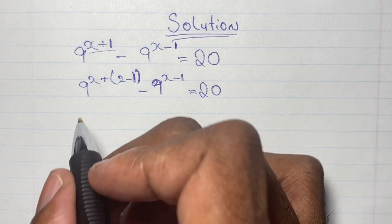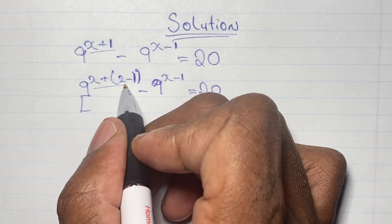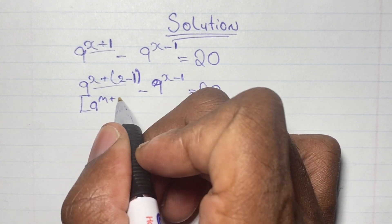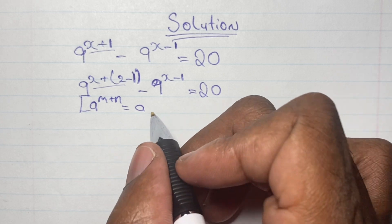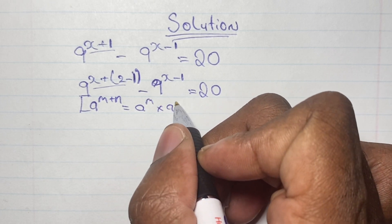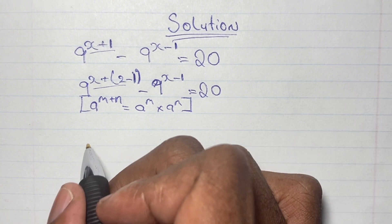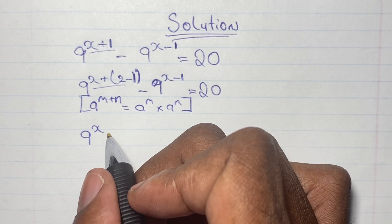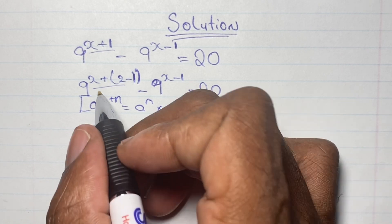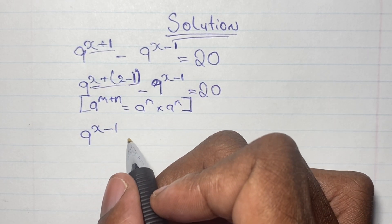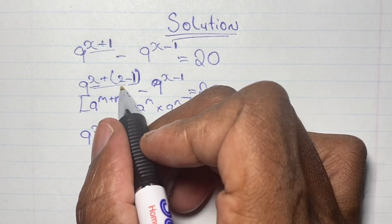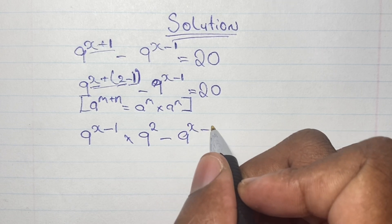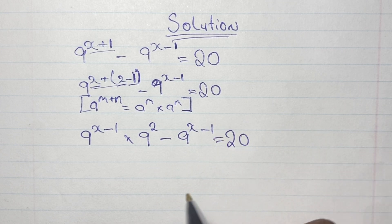It gets interesting from here as we will be using our math laws — specifically the law of indices, where a to the power of m plus n is the same as a to the power of m times a to the power of n. We would have the same base with two different powers. This means we can simplify our equation as 9 to the power of x minus 1, times 9 to the power of 2, and then we subtract 9 to the power of x minus 1, all equal to 20.